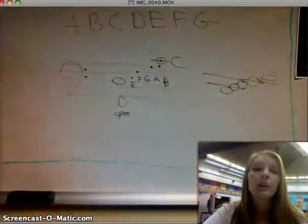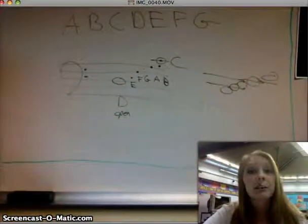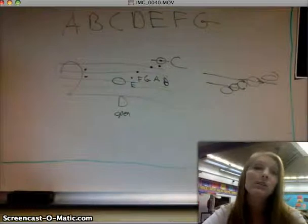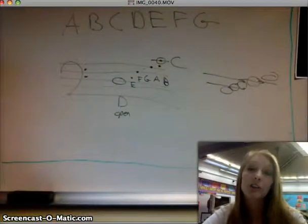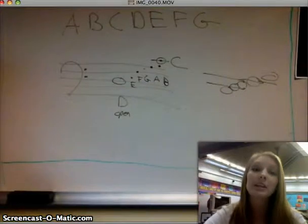So hopefully this gives you a good start on naming your note names. You now understand the system that we use. We use the first seven letters of the alphabet, A, B, C, D, E, F, G. And as long as you know your anchor note, open D, on your clef, you can figure out any note. Hope this helps you with your note names, and thanks for watching.